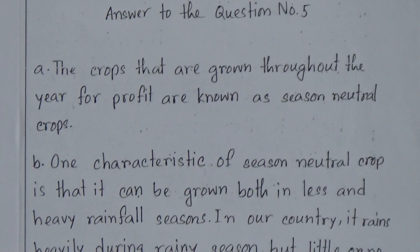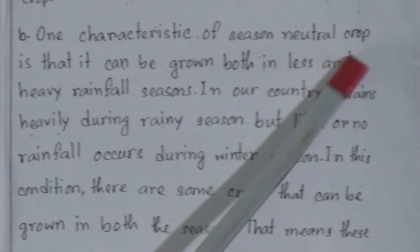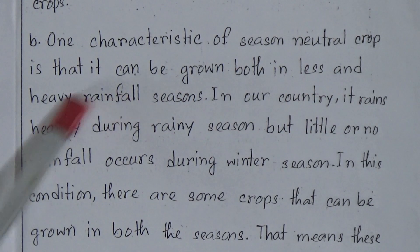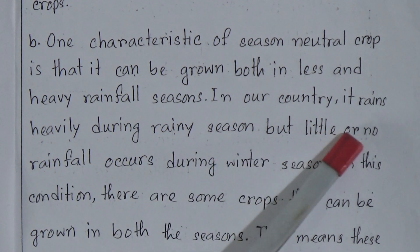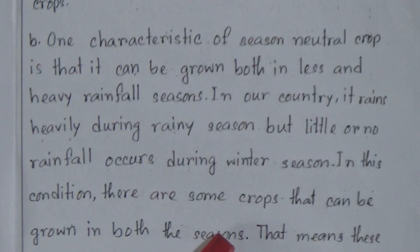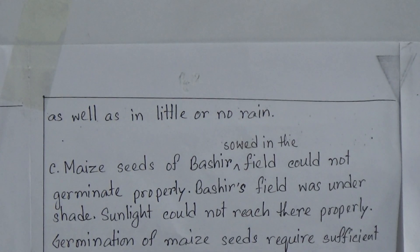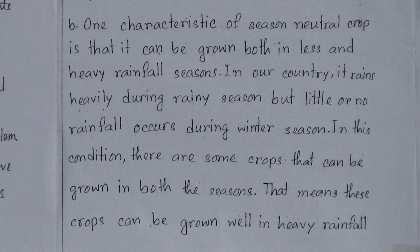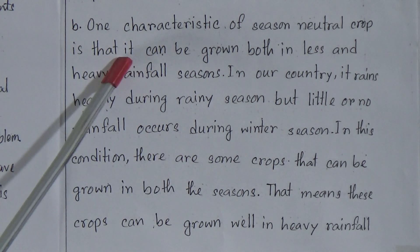Question B: Explain a characteristic of season neutral crop. The answer is: one characteristic of season neutral crop is that it can be grown in both less and heavy rainfall seasons. In our country, it rains heavily during the rainy season but little or no rainfall occurs during winter season. Some crops can be grown in both seasons — they can grow well in heavy rainfall as well as in little or no rain. You will try to give your answer within three to four sentences, and question B carries two marks.